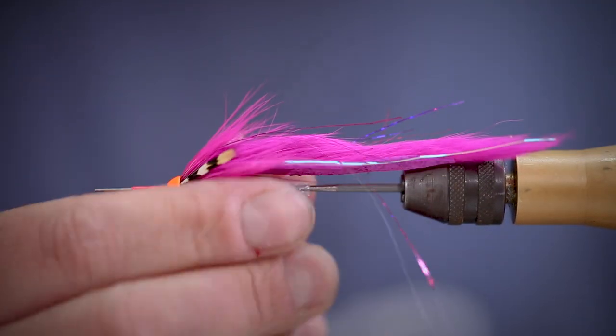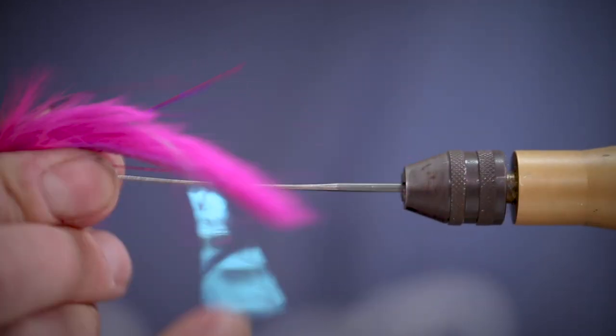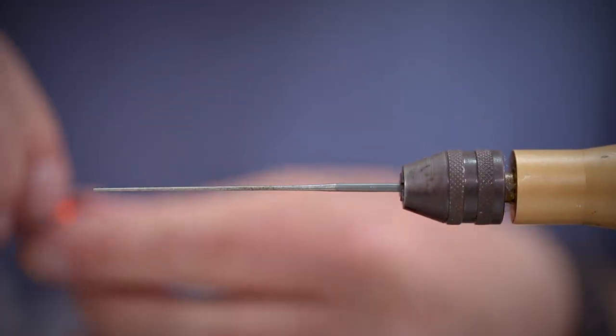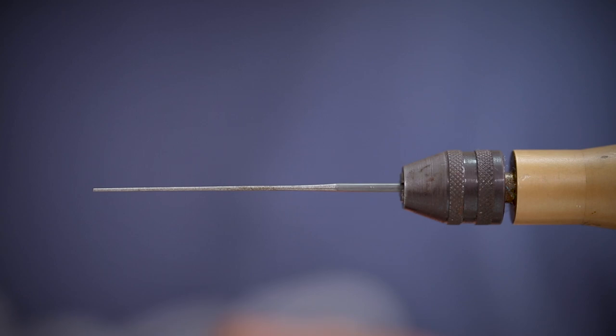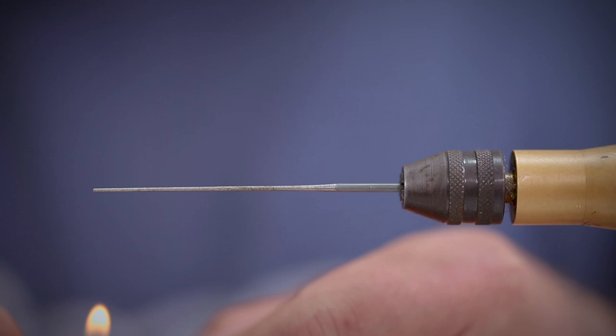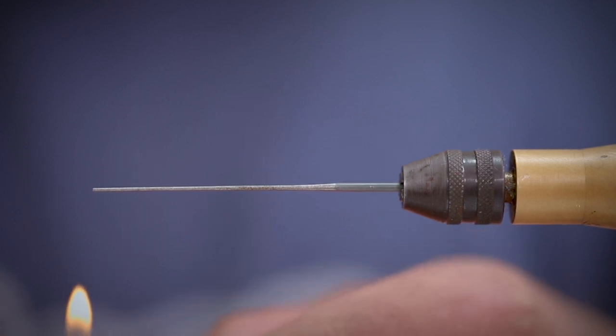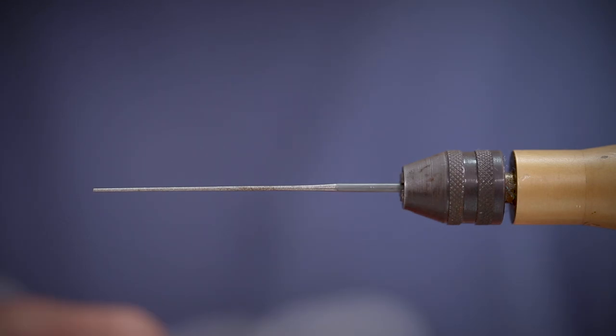All that's left to do is trim away the waste tubing 2mm from the cone and burn it down with a lighter. Then we're just going to pop it back on the needle to open up the hole again.